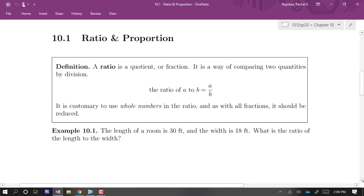A ratio is just a quotient or a fraction. It's a way of comparing two quantities by division. And when we talk about the ratio of a to b, that is equal to a over b.